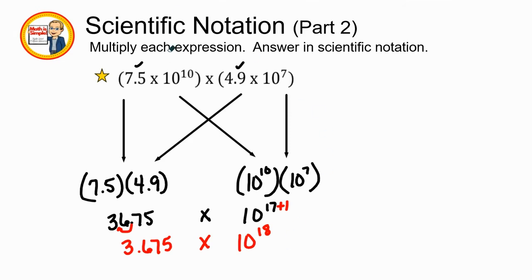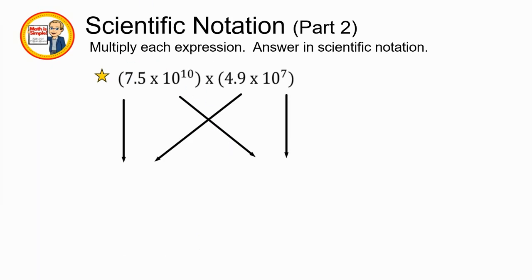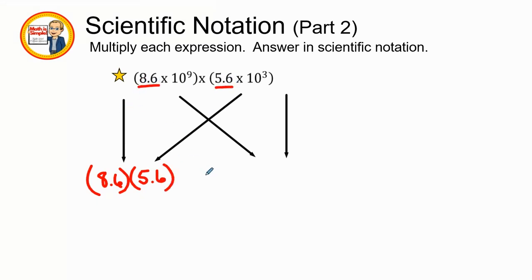All right. Our final example is going to be 8.6 times 10 to the 9th times 5.6 times 10 to the 3rd. So we have 8.6 times 5.6, we get our two terms right here, and then we're going to multiply our exponents, which is 10 to the 9th power times 10 to the 3rd power. So 8.6 times 5.6 is 48.16 times, with the product rule, 10 to the 12th power.